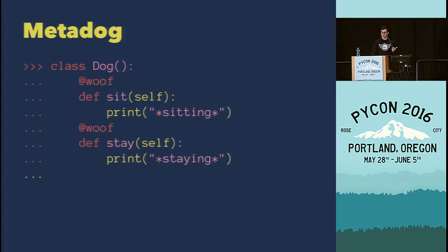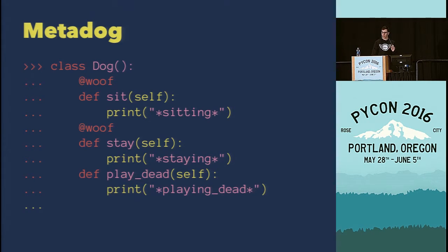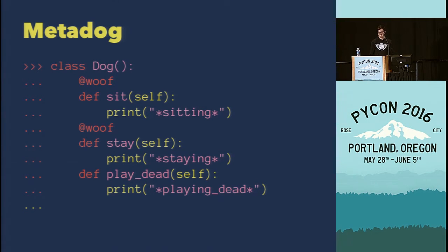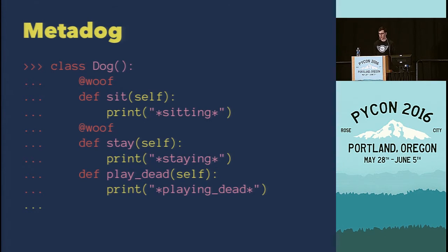Then the client says they'd like the dog to be able to play dead too. We think we can get it done this sprint. We write one more patch and deploy it to prod — and then oh no, we have a bug in production. We forgot to decorate the play dead function and now dogs are not woofing when they're rolling over. Users are very confused; they think their dogs are actually dead. We wish to ourselves, wouldn't it be so great if we could just automatically decorate every function in this class to meet the original requirements — that a dog makes a dog noise whenever it does anything. And then we remember metaclasses.